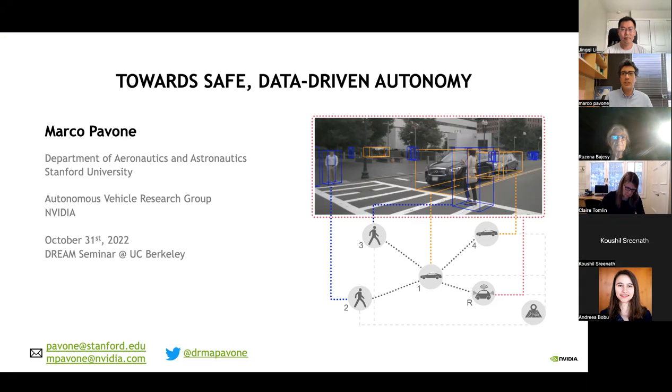Specifically in this talk, I will discuss some of the key open research challenges that my groups at Stanford and NVIDIA are addressing in order to enable the widespread deployment of autonomous vehicles. The recurring theme will be how to make an autonomy stack increasingly data-driven while still retaining a strong notion of safety and interpretability.